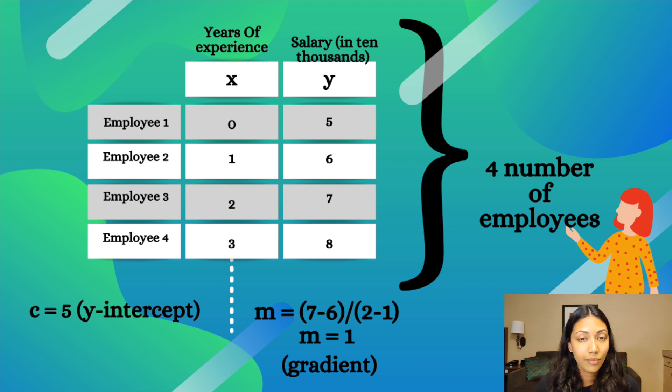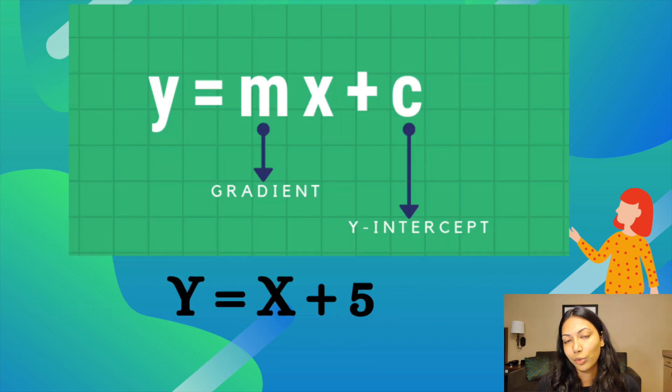Meanwhile, m is your gradient. So in order to find your gradient, your gradient is, you just have to take two points. That gives us m equals one. So this equation, this very basic equation for this very simple data set is y equals x plus five.